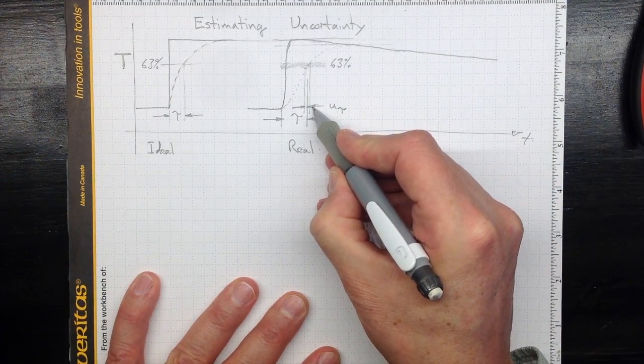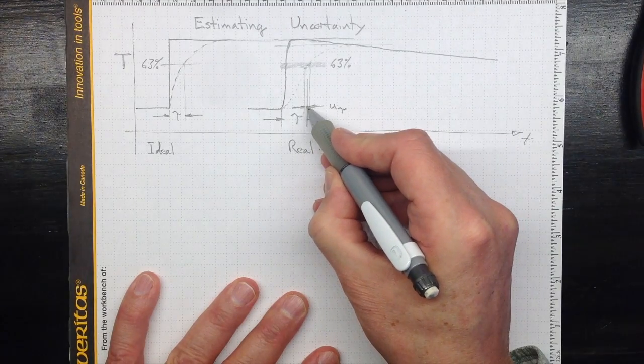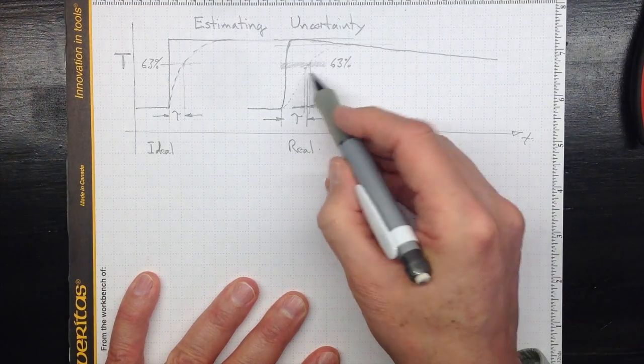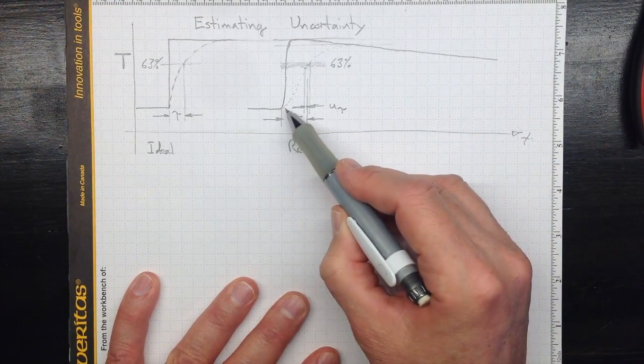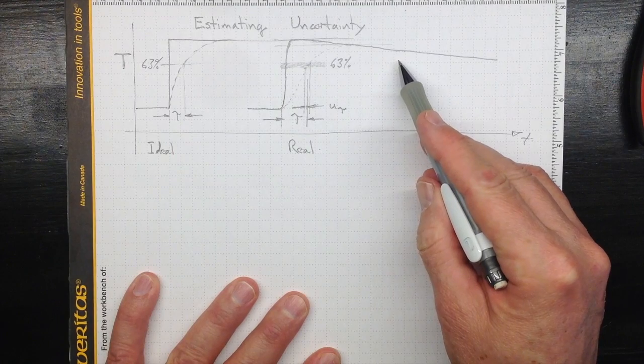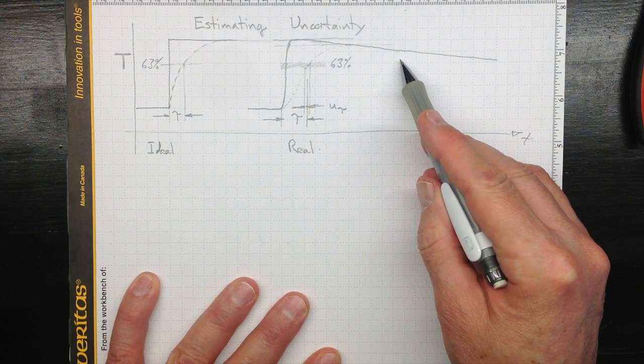We've got some uncertainty in that time constant that arises mostly out of the uncertainty in the test conditions that we used, rather than the uncertainty in the exactitude of the individual measurements.